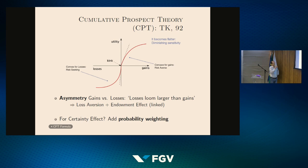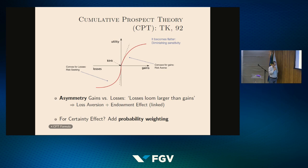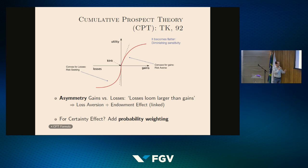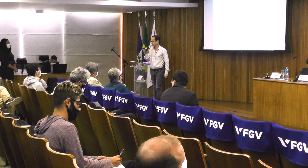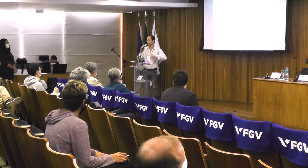The main model in behavioral economics that tries to address these phenomena is known as cumulative prospect theory. Individuals have a value function that depends on whether we are in the gain domain or the loss domain relative to some reference point, and the utility in the loss domain is steeper than in the gain domain — this is known as losses looming larger than gains. There is often a kink at zero. This explains loss aversion and the endowment effect. To capture the certainty effect, you add probability weighting.